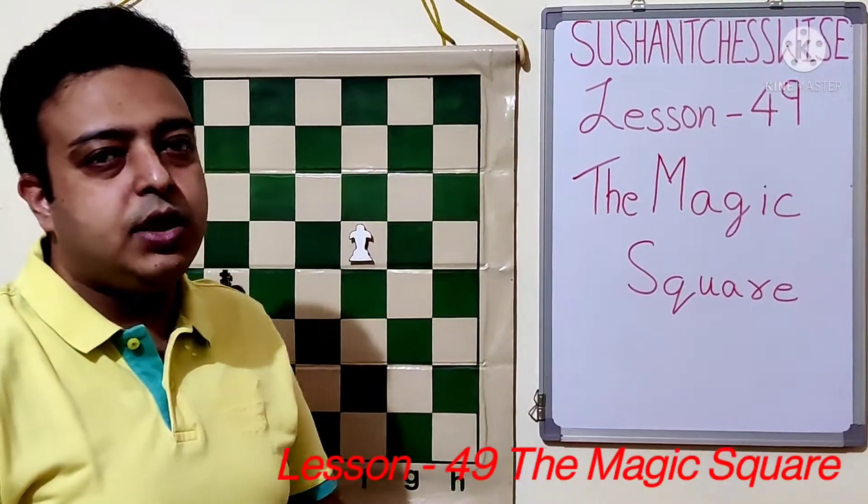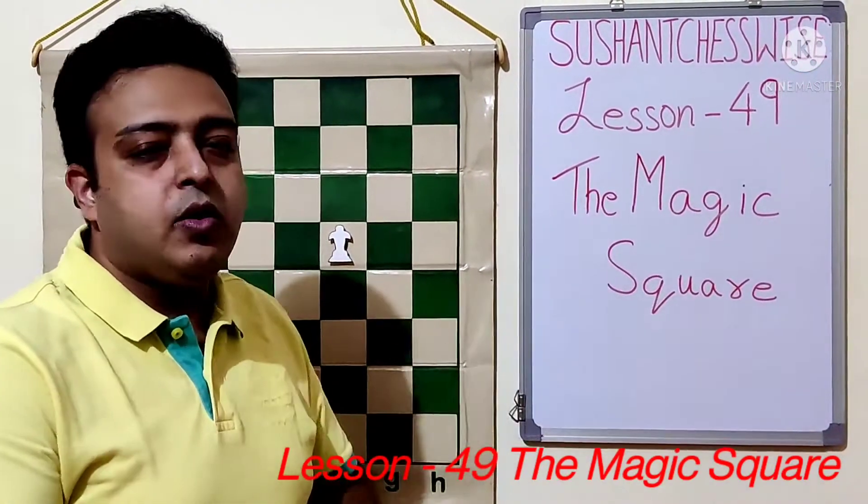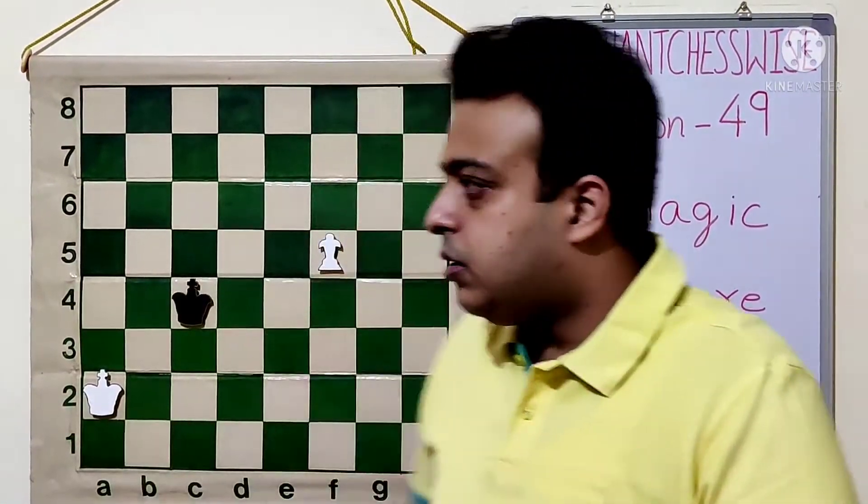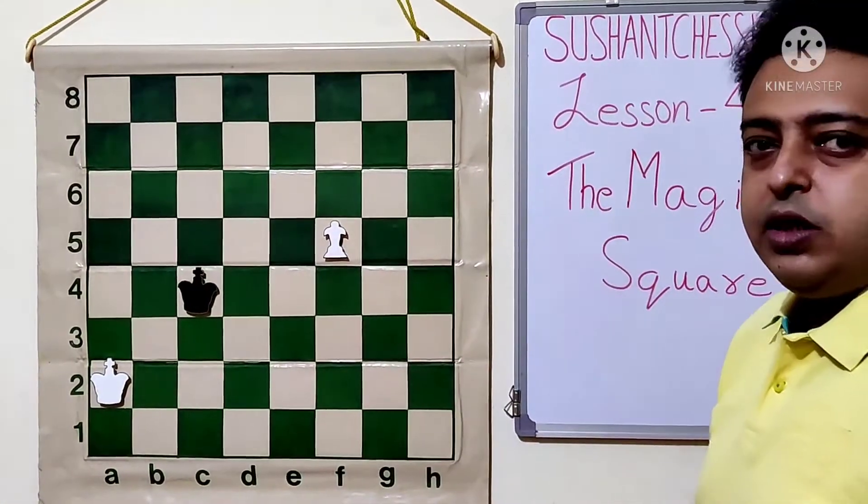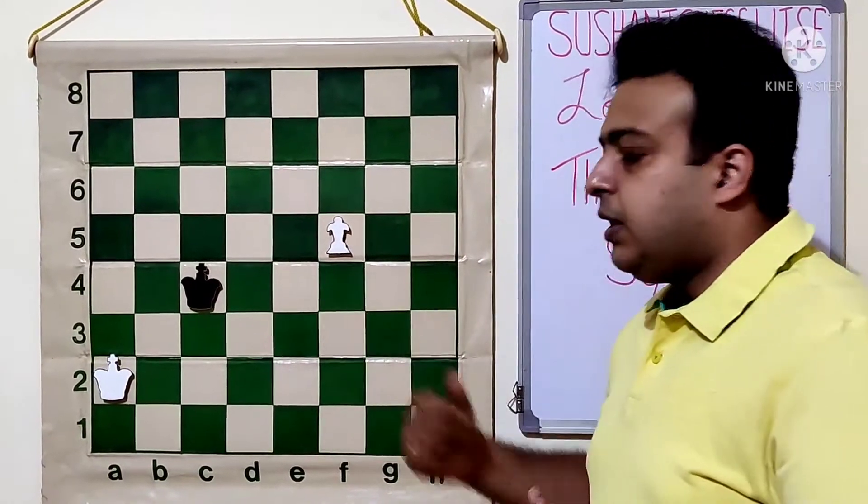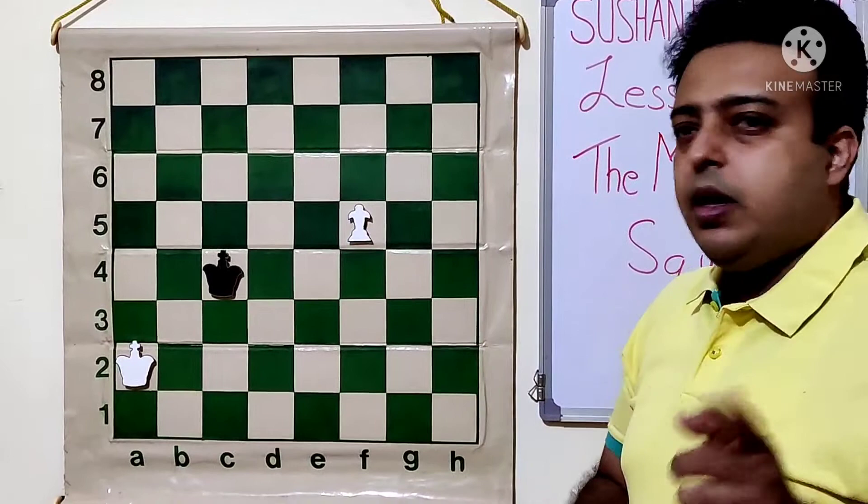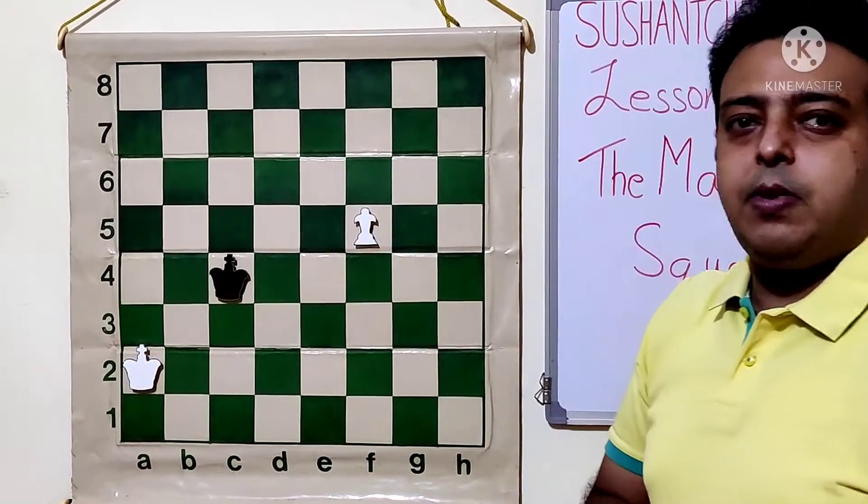Hello friends, welcome to my channel Sushant Chesswise. Today we are going to look at some endgame concepts. So we have got here the magic square. What is the magic square? Basically it is the rule of square.